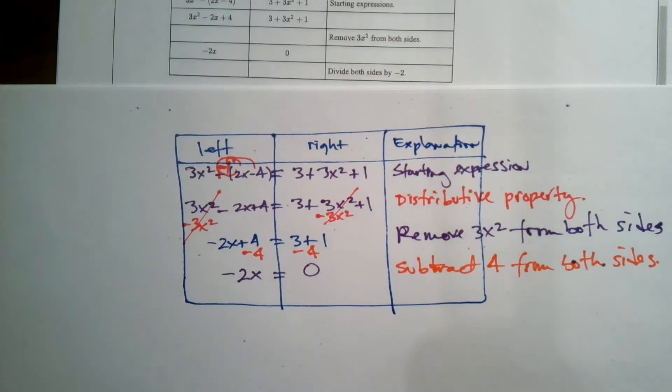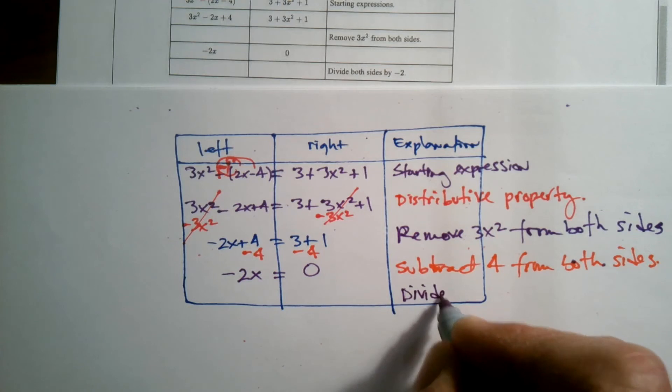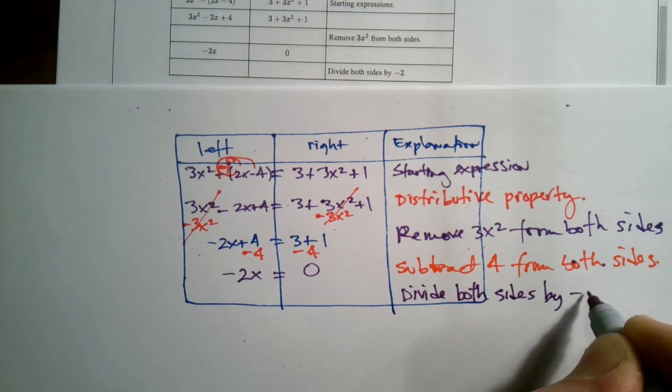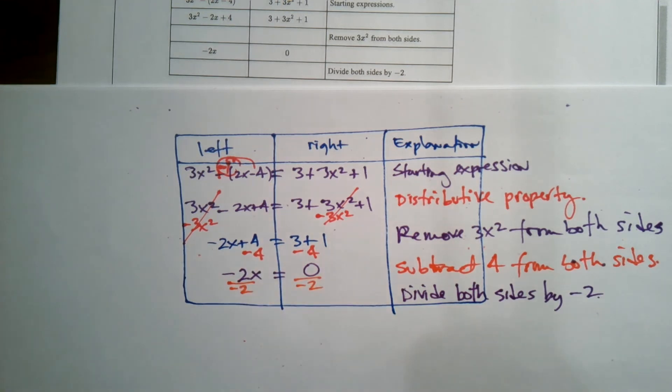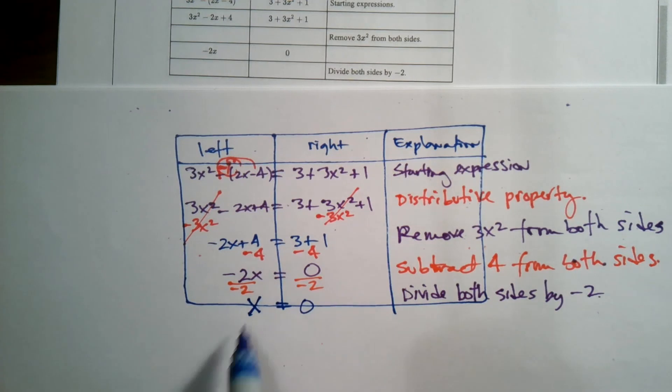And then the next step they say is to divide both sides by -2. That's dividing out the coefficient, right? What does that look like? That looks like taking this -2 and dividing both sides. Why? Because you want to get the x alone, right? So what would you write in that? That would be this final step of x equals 0. So what's written is x = 0 after you divide by -2. And then now we've got our final answer. So that's how the table should be complete.